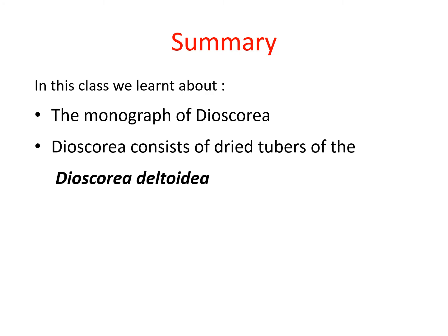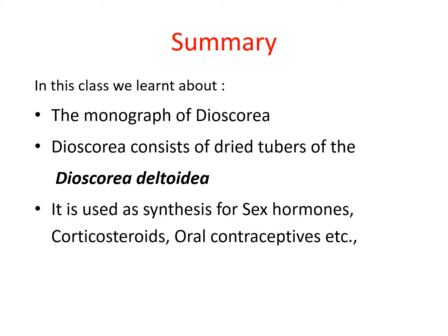In summary of this topic, we have learned about the monograph of Dioscoria. Dioscoria consists of dry tubers obtained from Dioscoria deltoida. It is used for synthesis of sex hormones, corticosteroids, and for oral contraceptive synthesis.